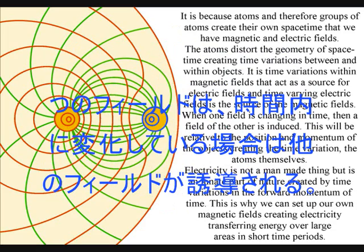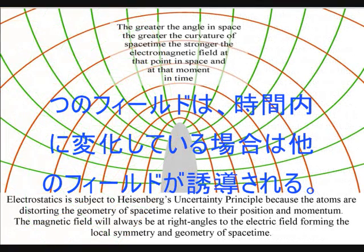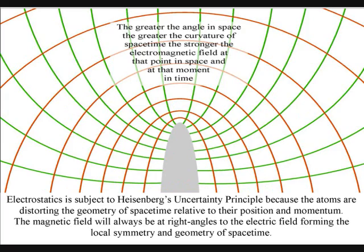When one field is changing in time, then a field of the other is induced. This will be relative to the position and momentum of the objects creating the time variation, the atoms themselves.